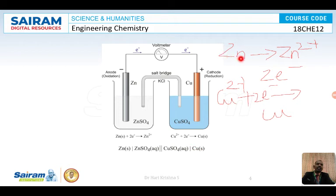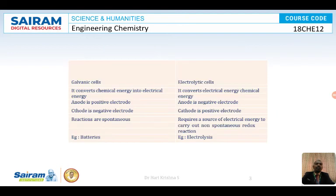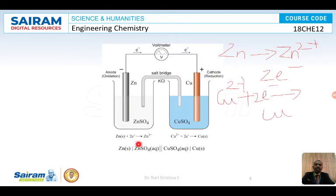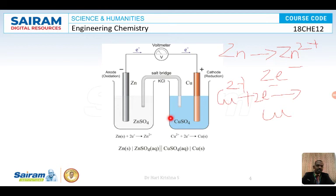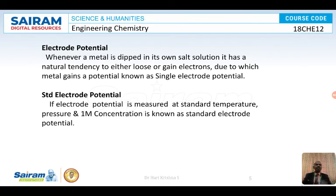The cell can be represented using notation where the salt bridge is written as two vertical lines. On the left-hand side, you write the anode; on the right-hand side, you write the cathode. For example: Zn | ZnSO₄ || CuSO₄ | Cu. The slash represents the electrode-electrolyte interface.